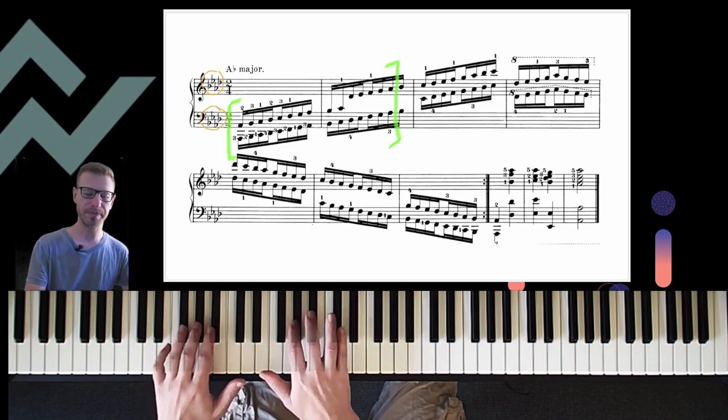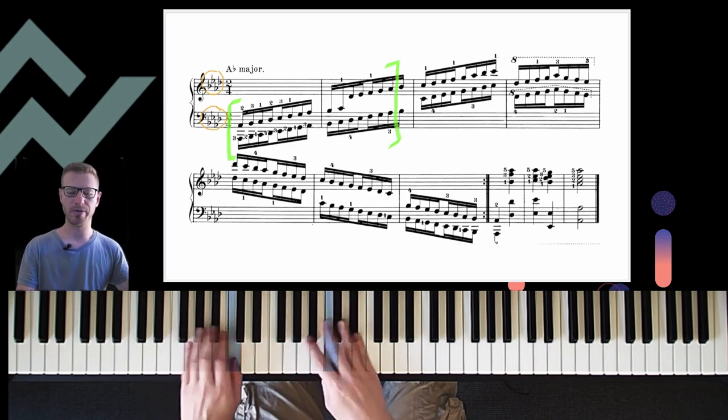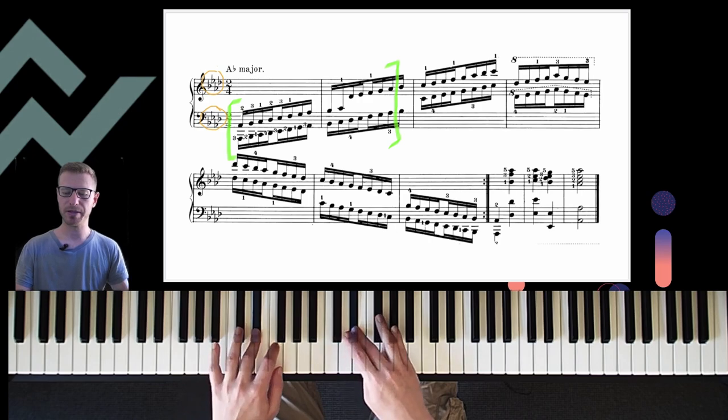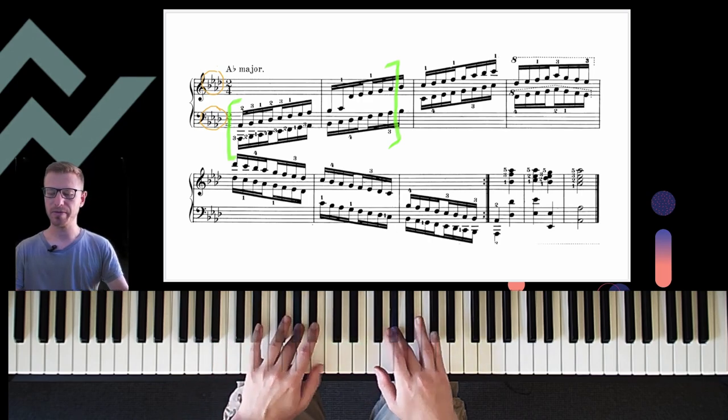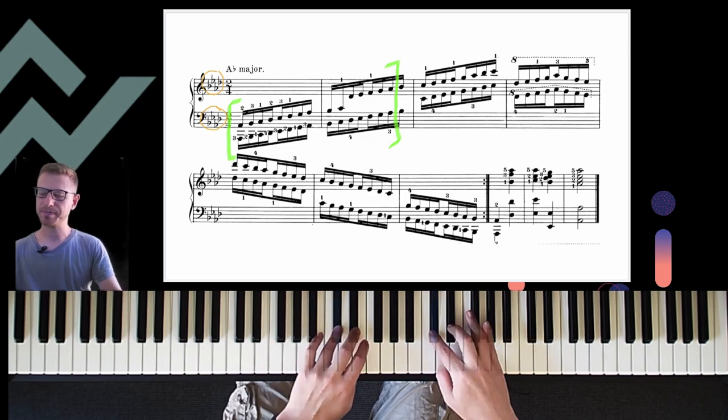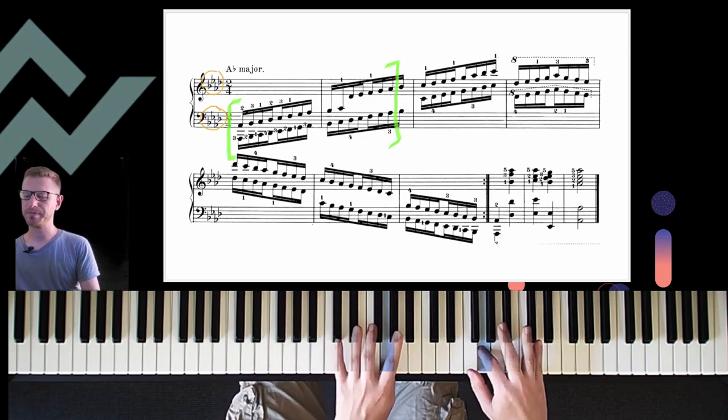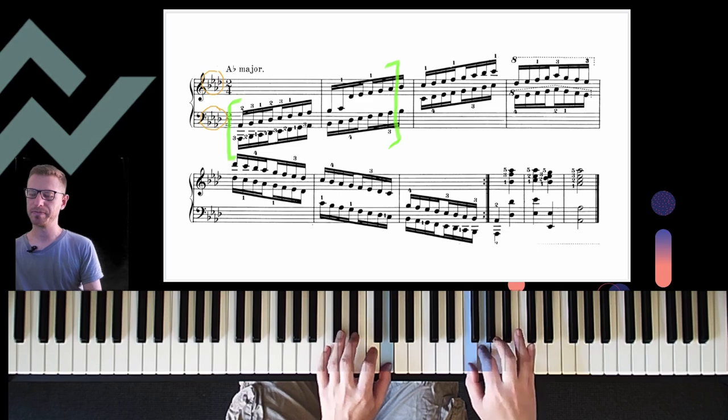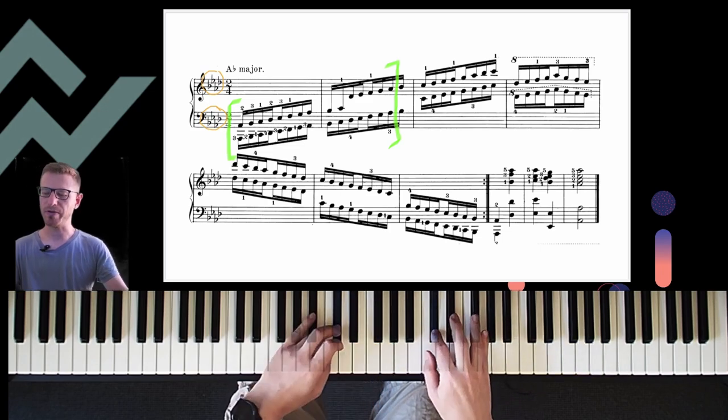Playing these hands together. Four over. Four, seven, both thumbs are on C. Both thumbs on C.